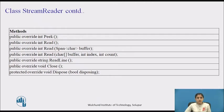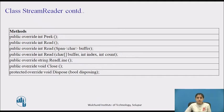The most common types of unmanaged resources are objects that wrap operating system resources such as files, windows, network connections, or database connections. The Dispose method accepts a boolean parameter: if true, it releases both managed and unmanaged resources; if false, it releases only unmanaged resources.